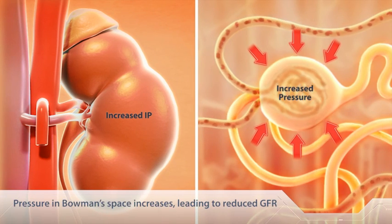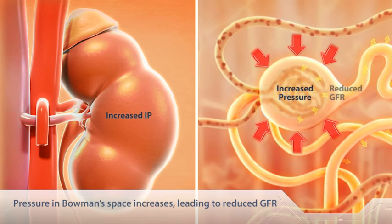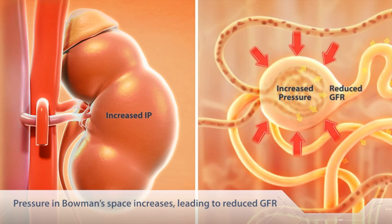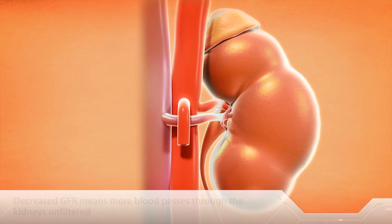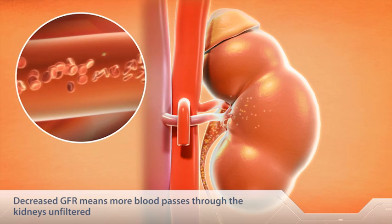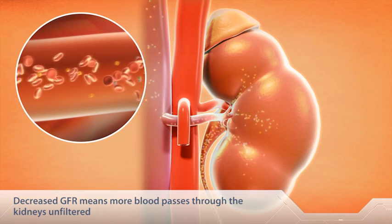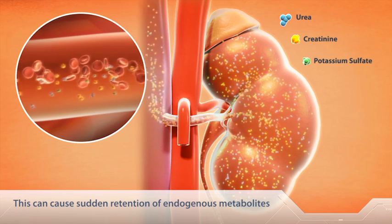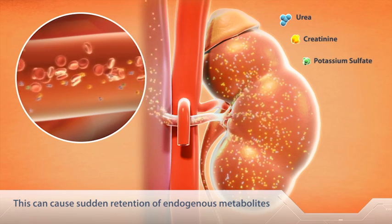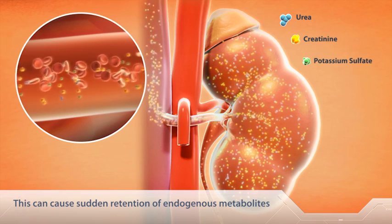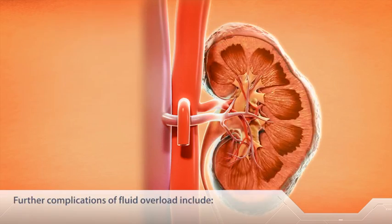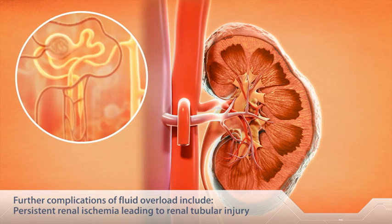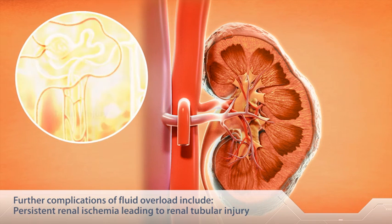The pressure in Bowman's space now increases, leading to reduced GFR and causing more blood to pass through the kidneys unfiltered. Ultimately, this can cause sudden retention of endogenous metabolites.